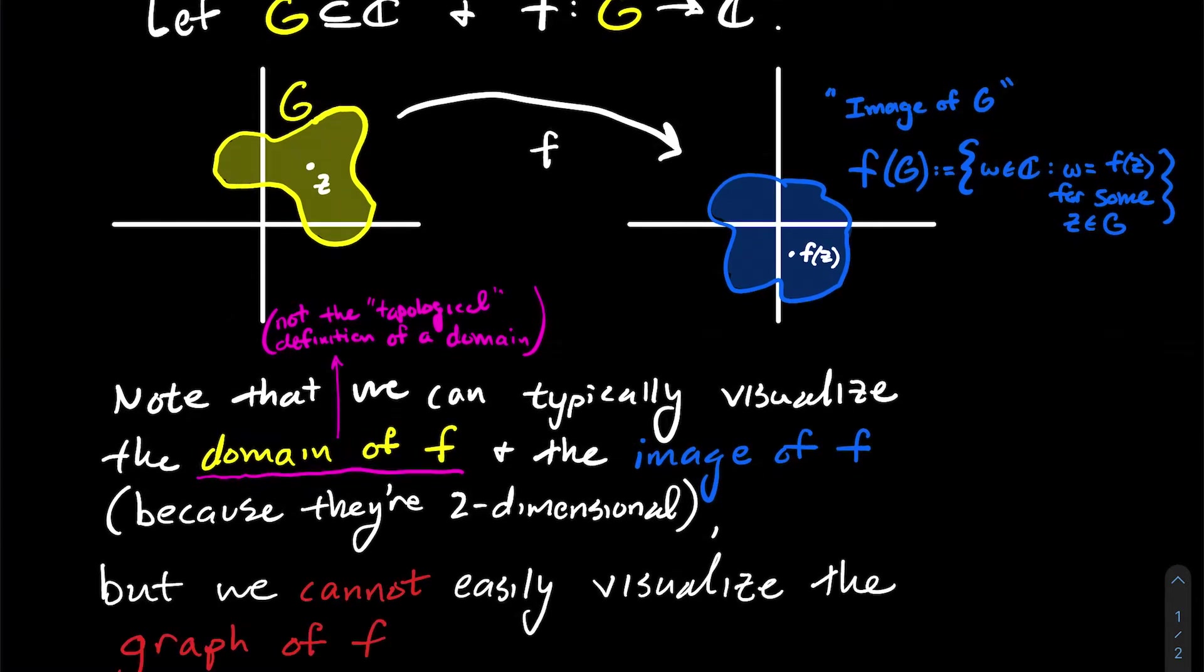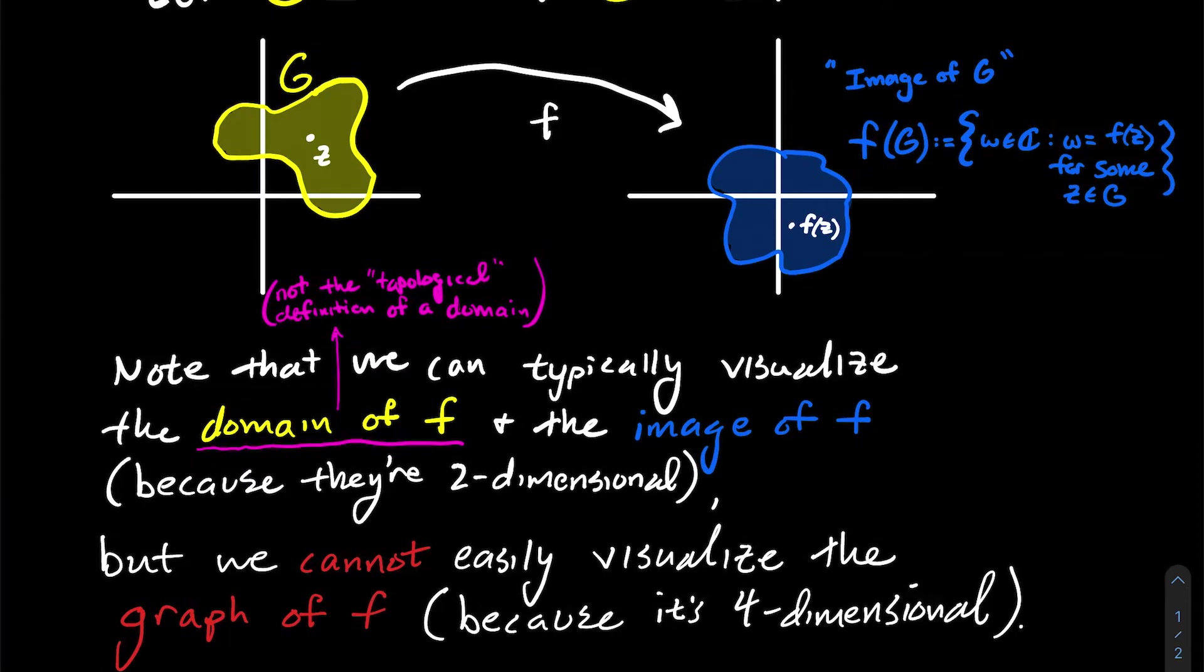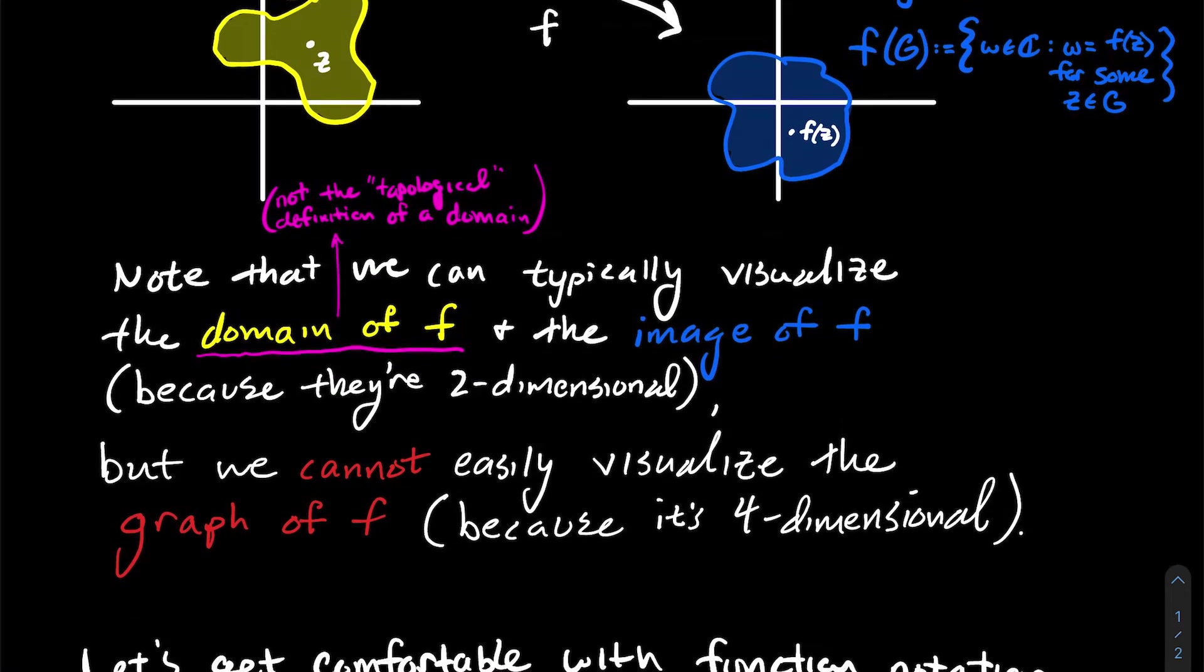But that's different than a graph. And so we cannot visualize the graph of the function f because if you think about it, the graph would have to live in four-dimensional space. And so since the domain and the co-domain are both two-dimensional, the graph would live in four-dimensional space. So not easy to visualize. And so we're not going to spend a lot of time worrying about trying to visualize the graph of a complex function.